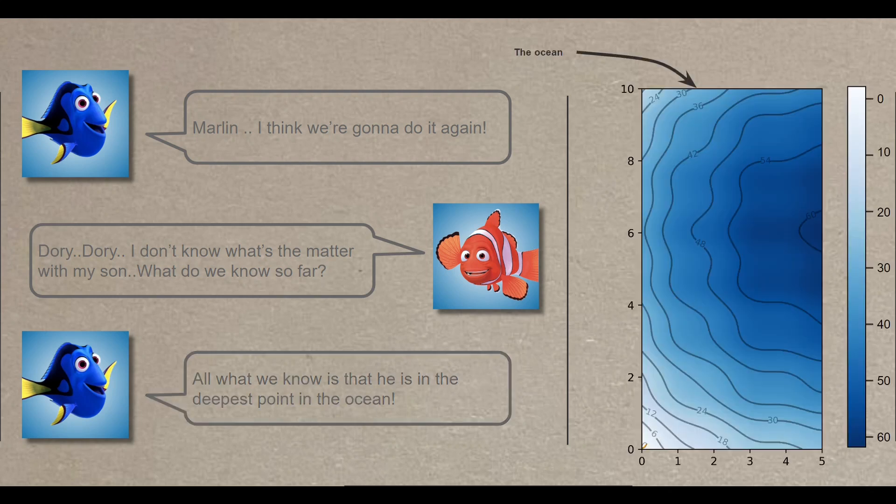So let's assume that this rectangle is the ocean. The darker the color, the deeper the ocean is. The only information we have is that Nemo is in the deepest point of the ocean. That means he is there. And as you might have guessed, the white color indicates shallower depths, so the ocean goes deeper in this direction.